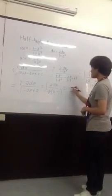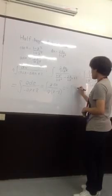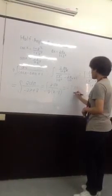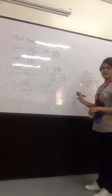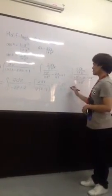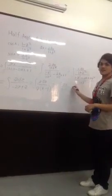We have negative 2Z over Z minus 1. We will use the formula of... Load. Load.